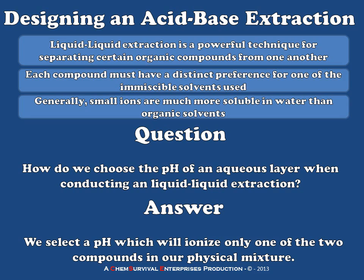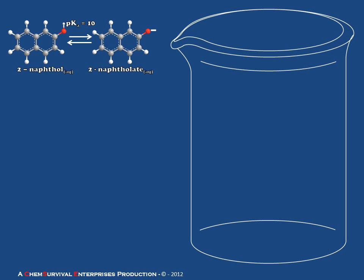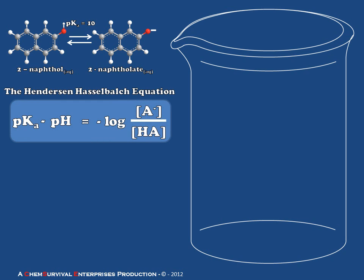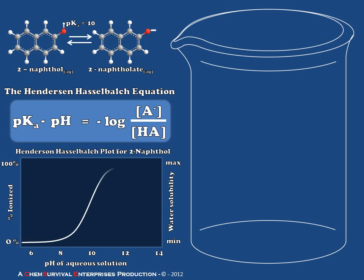Let's start laying a foundation for understanding how and why we do this. I'm going to begin by talking about the molecule 2-naphthol specifically. 2-Naphthol is an aromatic alcohol which can be deprotonated to form naphtholate — it's a weak acid with a pKa of about 10. Its water solubility is governed by the Henderson-Hasselbalch equation, which tells us that the amount of charged and uncharged species in aqueous solution is a function of the difference between the molecule's pKa and the pH of the solution. Graphically, this produces a sigmoidal plot with a transition point right at the pKa, leveling off more than two pH units away into a stable percentage ionized.